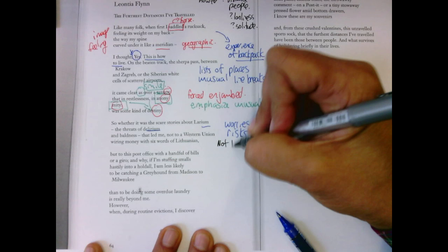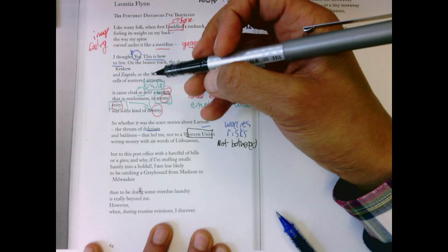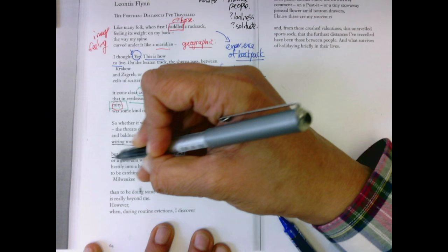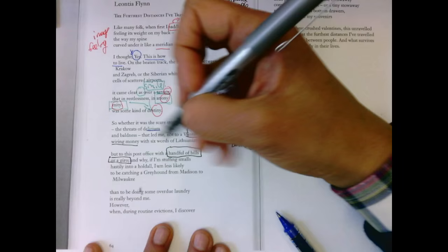Okay. She's not going to take the easy way out and go to Western Union wiring money. She's trying to hustle. She's trying to do it old school. She's going to post offices with bills and a gyro.